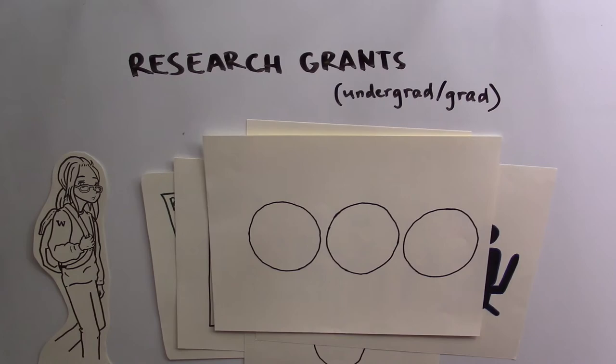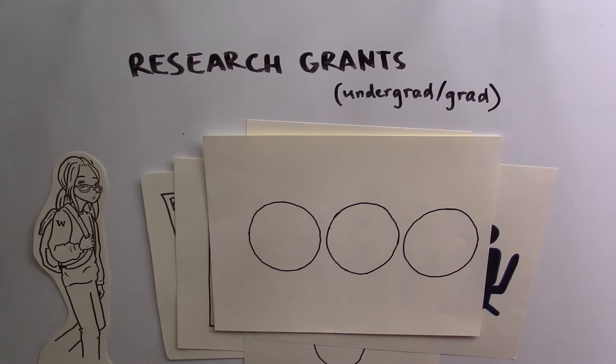One example of a research project funded through the Bridges Center was this zine that was made by four undergrad students who created a brief history of community resistance and labor activism at the University of Washington.